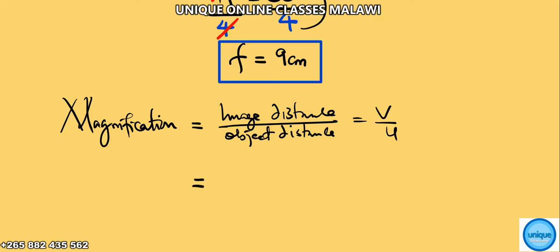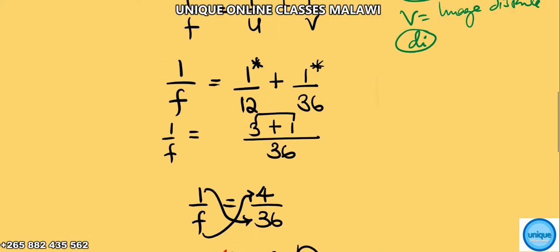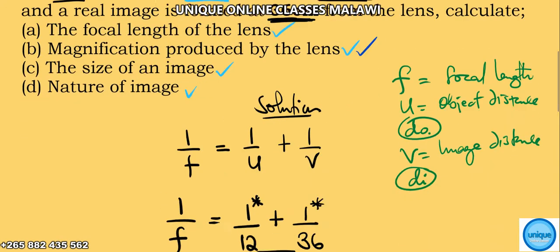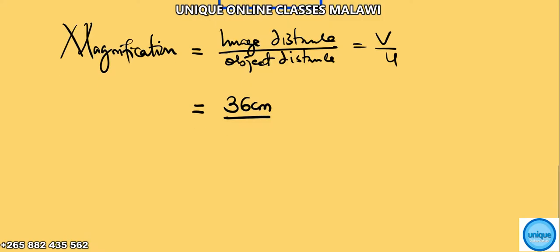So v, we're putting here 36 cm, then divided by u—our u is 12 centimeters. So our magnification: the centimeters cancel, 36 divided by 12 gives us 3. So the magnification is 3.